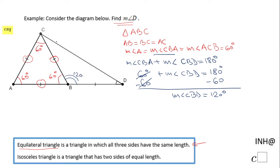Now we can look at triangle BCD. Triangle BCD is an isosceles triangle — we notice it has two congruent sides with the same measure. Those two sides are BC and BD.